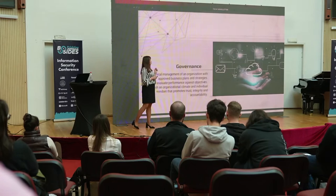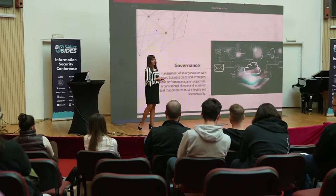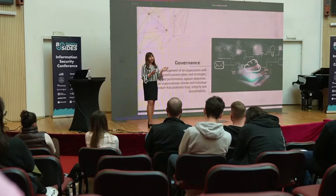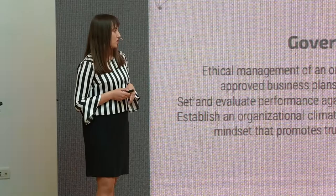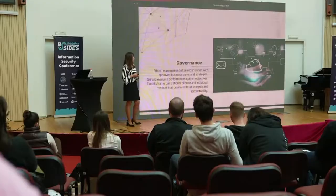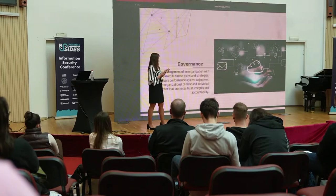I tried to show some definitions with representative pictures for each one of them. What is governance? It's having everything in your organization under control, and I focused on the governance of IT. Governance is the ethical management of an organization with approved business plans and strategies. Governance means transparency, ethics, and monitoring of your organization — and risk.